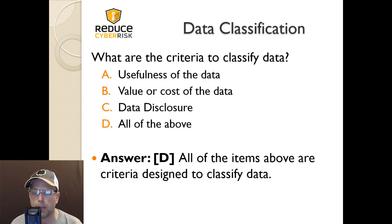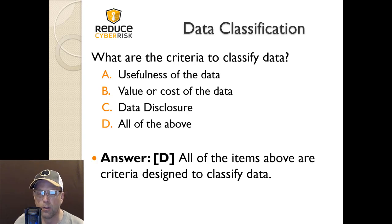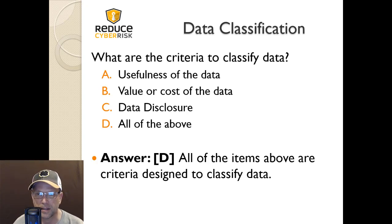D is the answer — all of the above. Usefulness of the data, value or cost of the data, and data disclosure are all criteria designed to classify data. Every single one of them is part of the criteria when you're looking at classifying specific types of data.